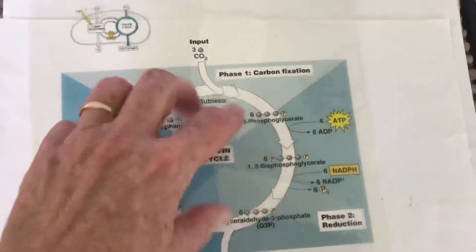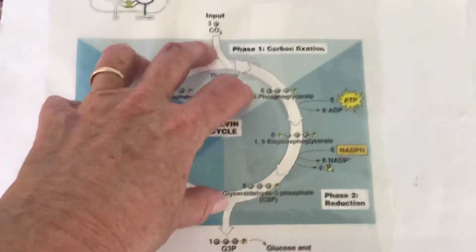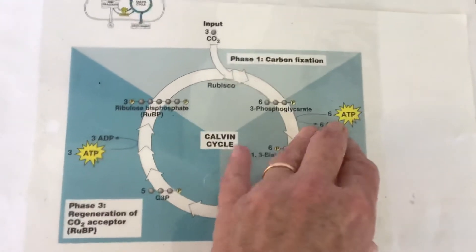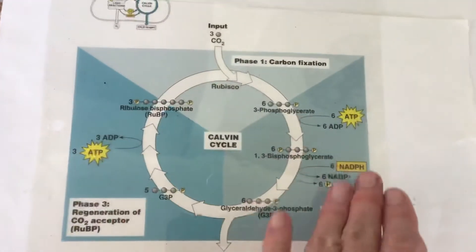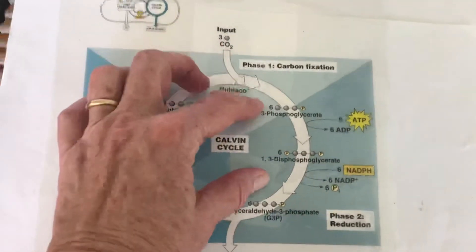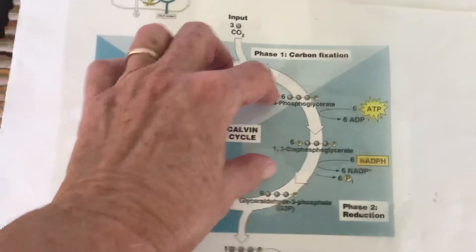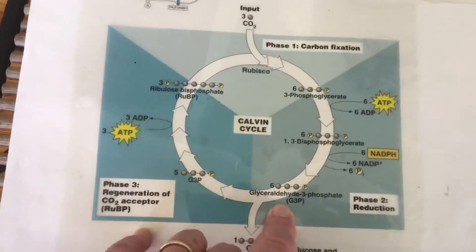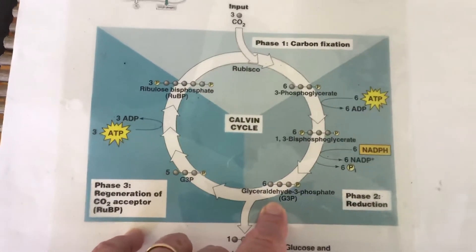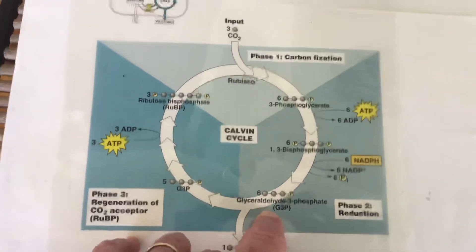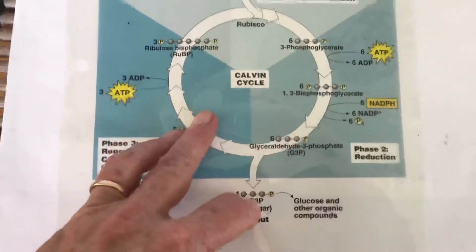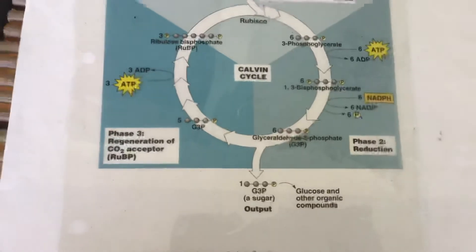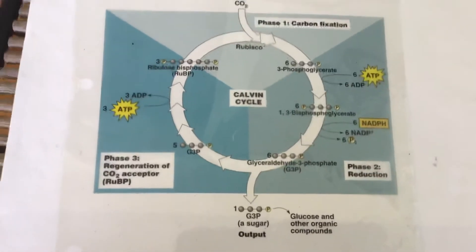All right, so then the next part of the cycle is energizing, right? So I'm going to use that ATP, the energy from the ATP, and I'm also going to use the excited electrons to be added to this PGAL to make, eventually, glyceraldehyde-3-phosphate, otherwise known as G3P.